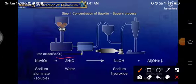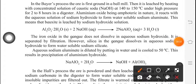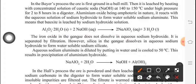Whatever iron oxide is coming, it is separated out. Here we are getting NaOH — sodium hydroxide — and aluminium hydroxide as precipitate. The reaction is: Al2O3·2H2O + 2NaOH → 2NaAlO2 + 3H2O. After getting dissolved in the aqueous sodium hydroxide, it is separated by filtration. The silica in the gangue also dissolves in aqueous sodium hydroxide to form water-soluble sodium silicate.